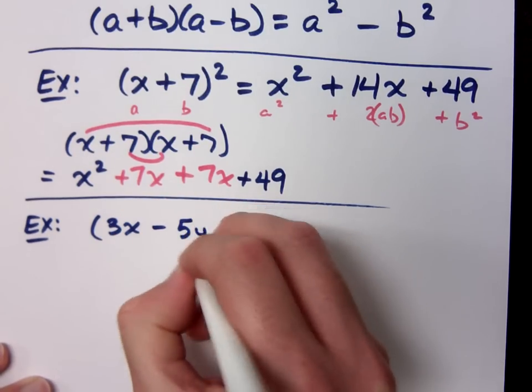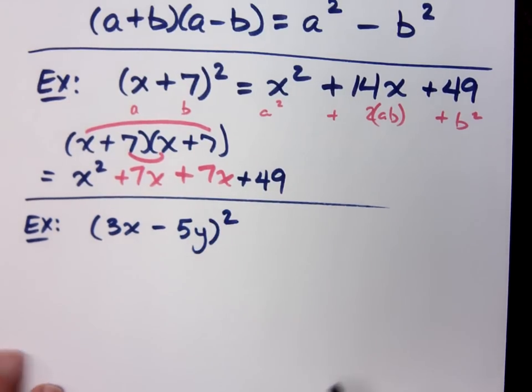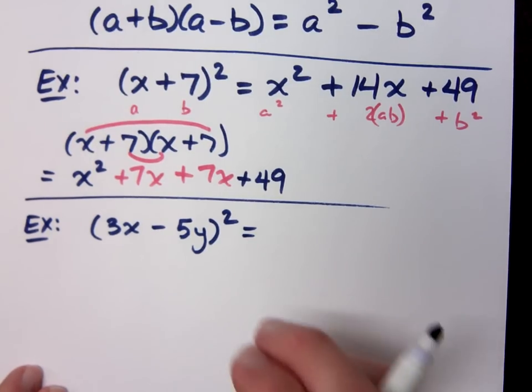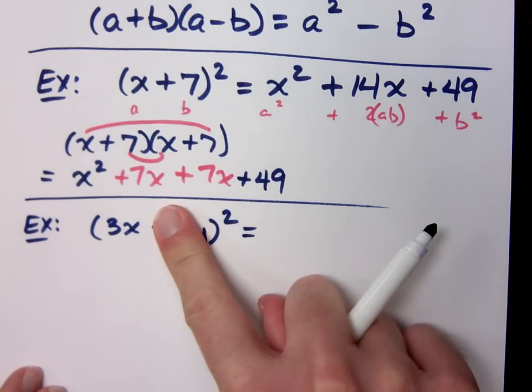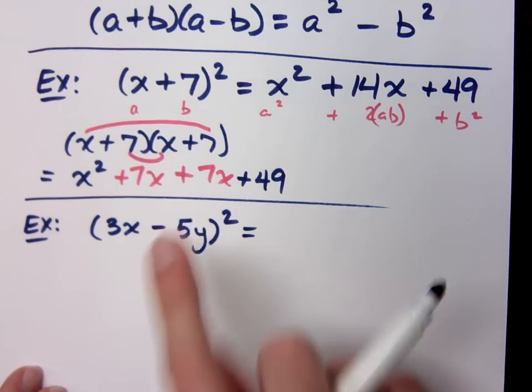How about (3x - 5y)²? Use that special product. What do you think is the first piece? 9x². If I look at this and I square the 3x, you get just what you were saying, which is 9x².